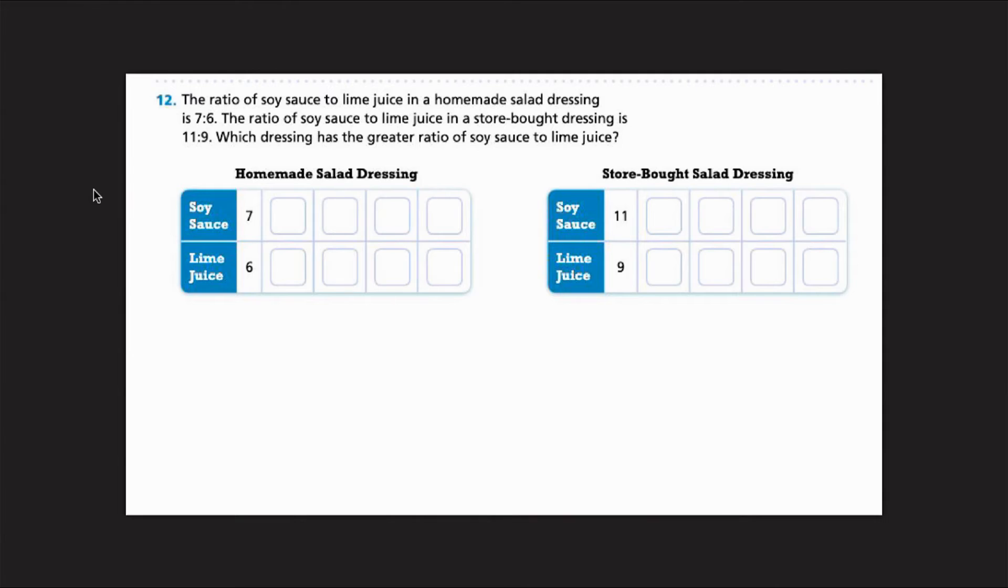Looking at the next one, it says the ratio of soy sauce to lime juice in a homemade salad dressing is 7 to 6. The ratio of soy sauce to lime juice in a store-bought dressing is 11 to 9. Which dressing has the greater ratio of soy sauce to lime juice? So we're going to go ahead and fill in our ratio tables just like we did on the previous problem. Times 2, times 3, times 4, times 5.